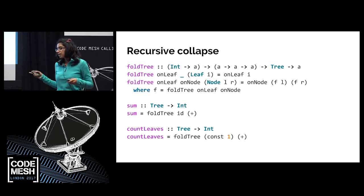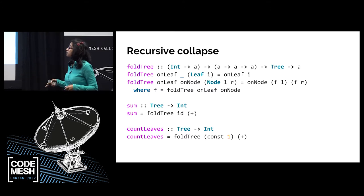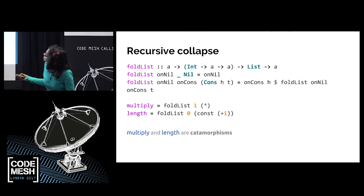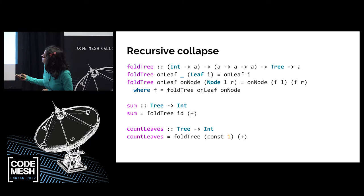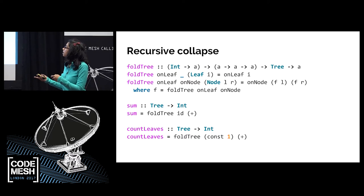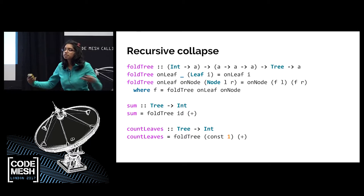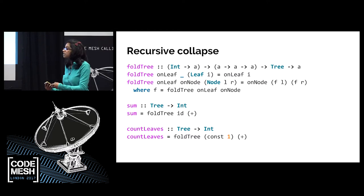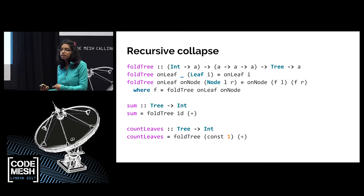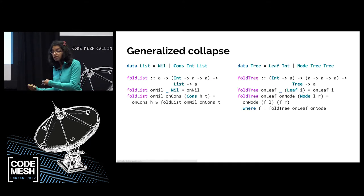The interesting thing is that I can write this for a different data structure. I can take a binary tree and write a fold for it. If it has a leaf, I can write a function to collapse a leaf; if it has a node, I can write another function to collapse a node. Again, I've captured recursion inside my fold. If I want to write a recursive collapse for a binary tree, I just need to provide a function for the leaf case and the node case. So I've got a fold function on a list and a fold function on a tree.